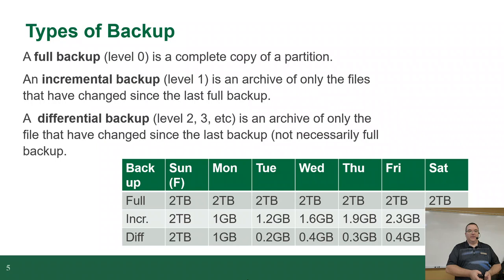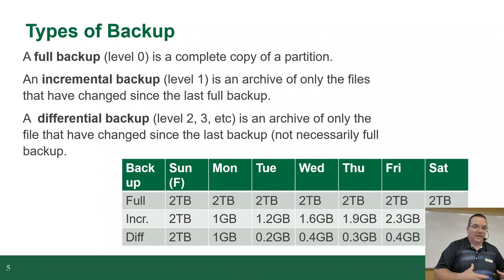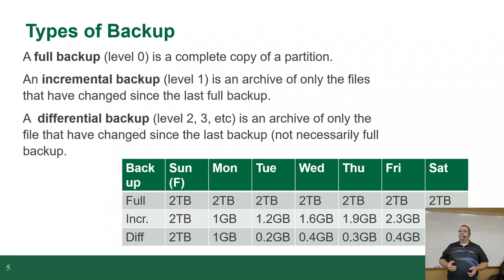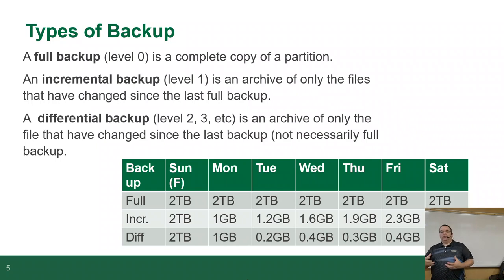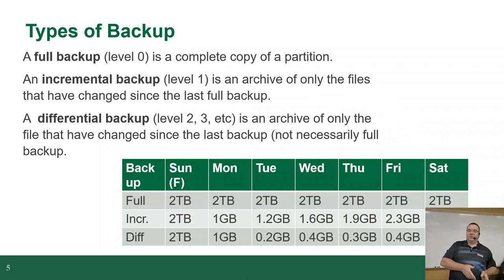There are three kinds of backup. There's a full backup, which is a complete copy of a partition — in Windows it would be a drive letter, on Mac it's the disk. Then you have incremental backups, which is a backup of only the files that have changed since the last backup. Here's an example: we do a full backup seven days a week and the file system is two terabytes of data. So on Sunday we back up two terabytes, Monday two terabytes, Tuesday, Wednesday, Thursday — two terabytes each day.